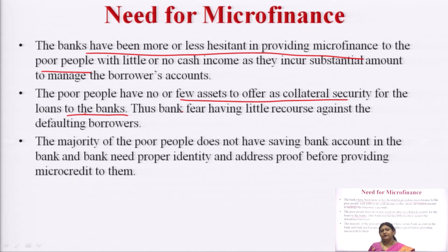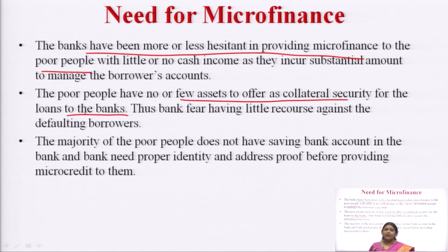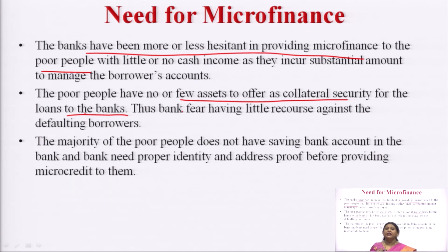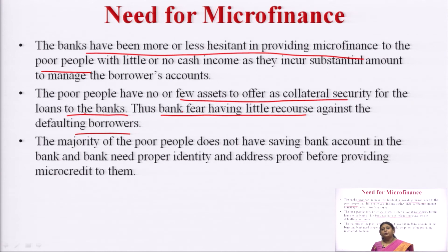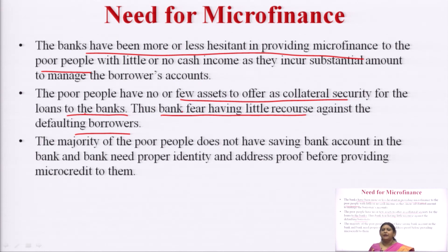If you go back to rural India, the problem they face is they do not have any collateral. They all want a livelihood, they have a plan, they want income generating activities, but the real issue is that they do not have any collateral. We want an institution or organization which could help these economically backward people to get funds. Banks do not provide because of the fear of non-performing assets — NPAs are the defaulters of the bank. When giving to people who do not have collateral, the bank cannot seize any asset if they cannot repay.